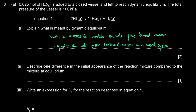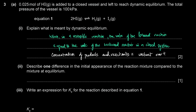That is the definition of dynamic equilibrium. The first part is the definition — rates of forward and backward reactions are equal — and the second part is the observation: the concentration of products and reactants is constant over time. Part 2: describe one difference in the initial appearance compared to the mixture at equilibrium. Initially only hydrogen iodide was added — it's a colorless gas. Eventually some iodine forms, which is a purple vapor. So the difference is that the colorless gas forms a purple vapor at equilibrium.